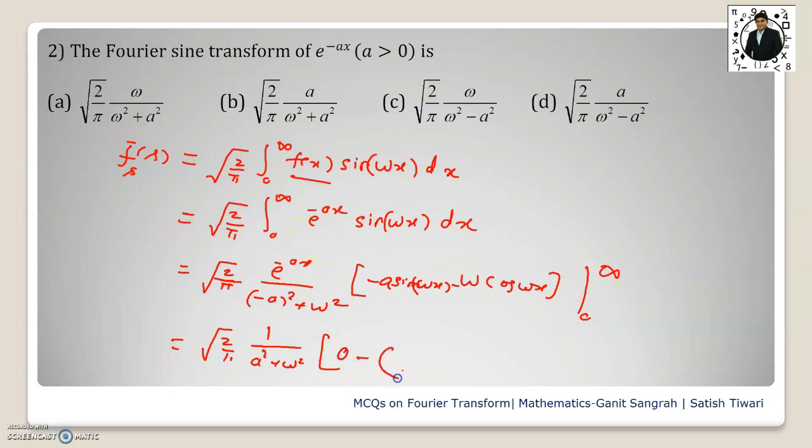Now put the 0. E to the power 0 is 1, so it will be 1 here, and then sin(0) is 0. This will vanish. Cos(0) is 1.